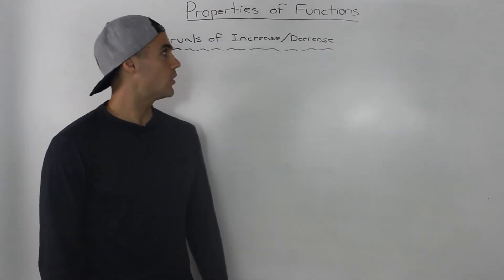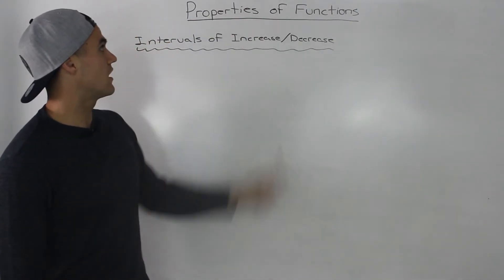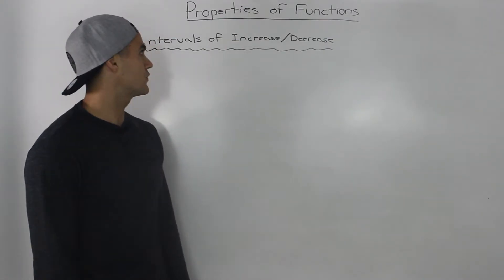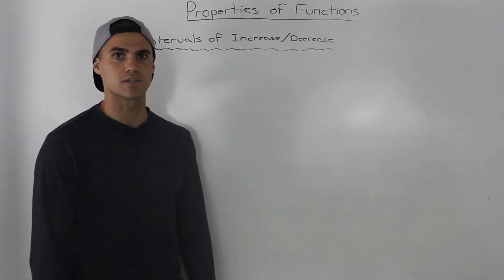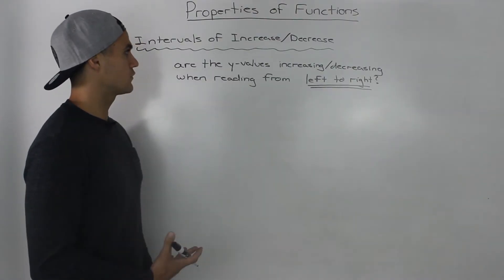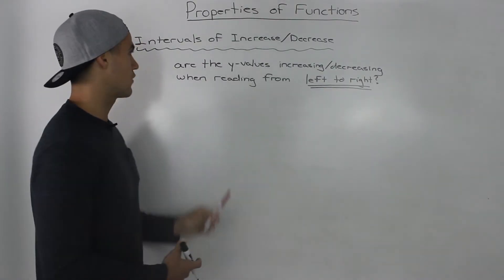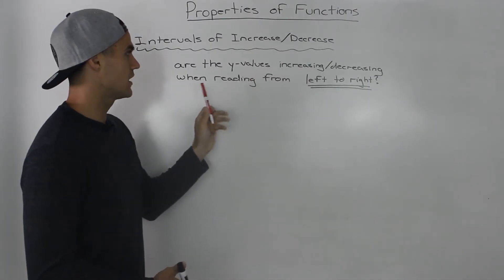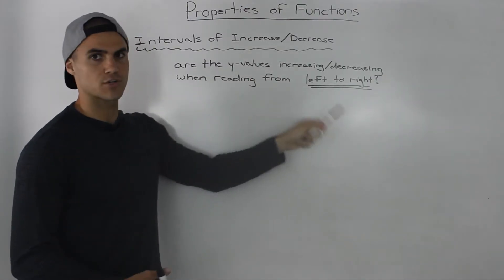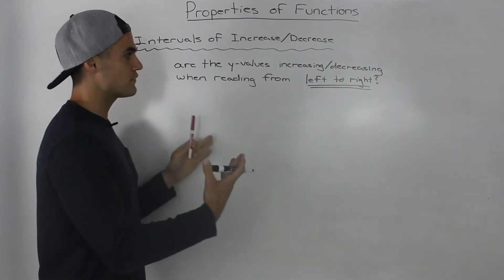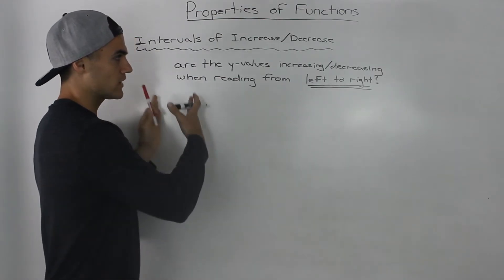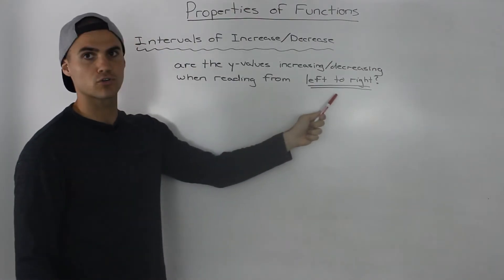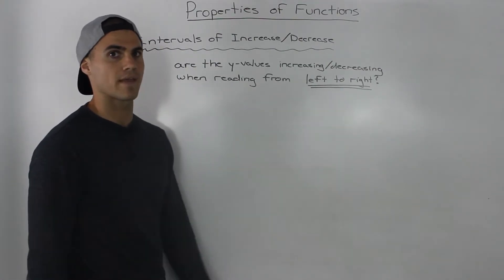In this section, we're going to go over some properties of functions. The first property we're going to talk about is intervals of increase and decrease. When looking for these intervals, the question you want to ask yourself is: are the y values increasing or decreasing when reading from left to right? You have to read a graph from left to right when looking for these intervals — that's pretty crucial, and a lot of students make mistakes at that part.